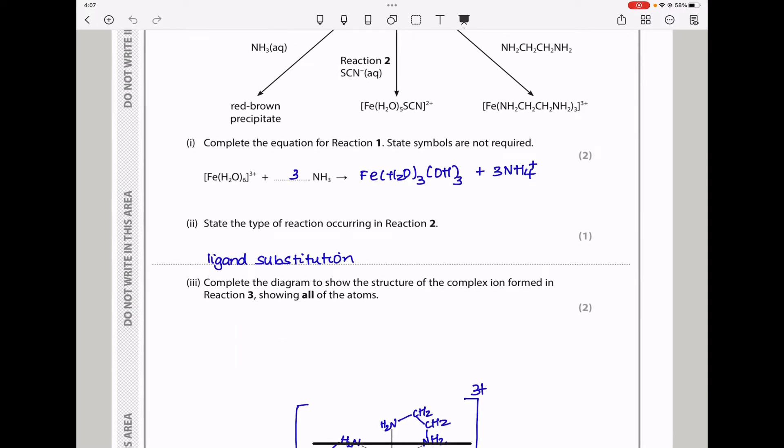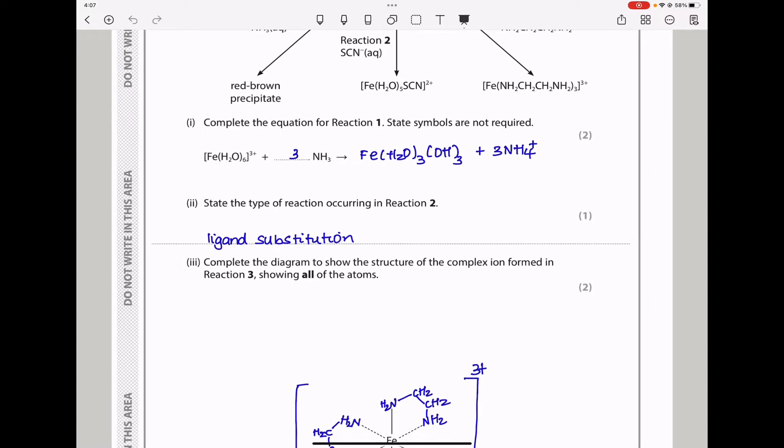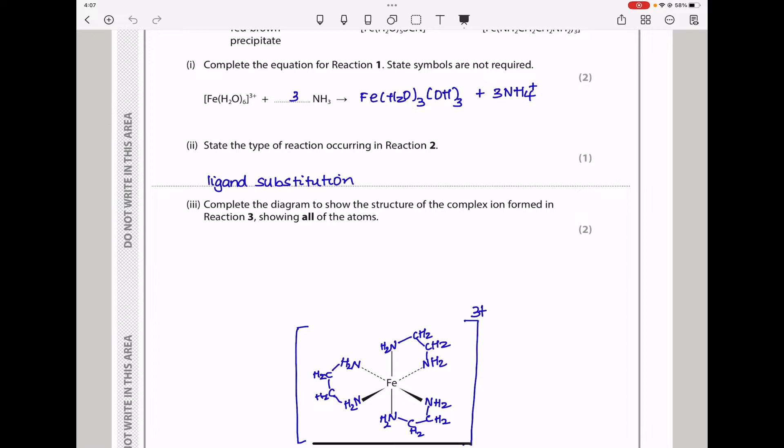Here they say, state the type of reaction occurring in reaction 2. Reaction 2, we can see there were 6 water ligands, but now we just have 5 water ligands and the 6th ligand that has been introduced. So that must be a ligand substitution reaction, or some people call it ligand exchange.